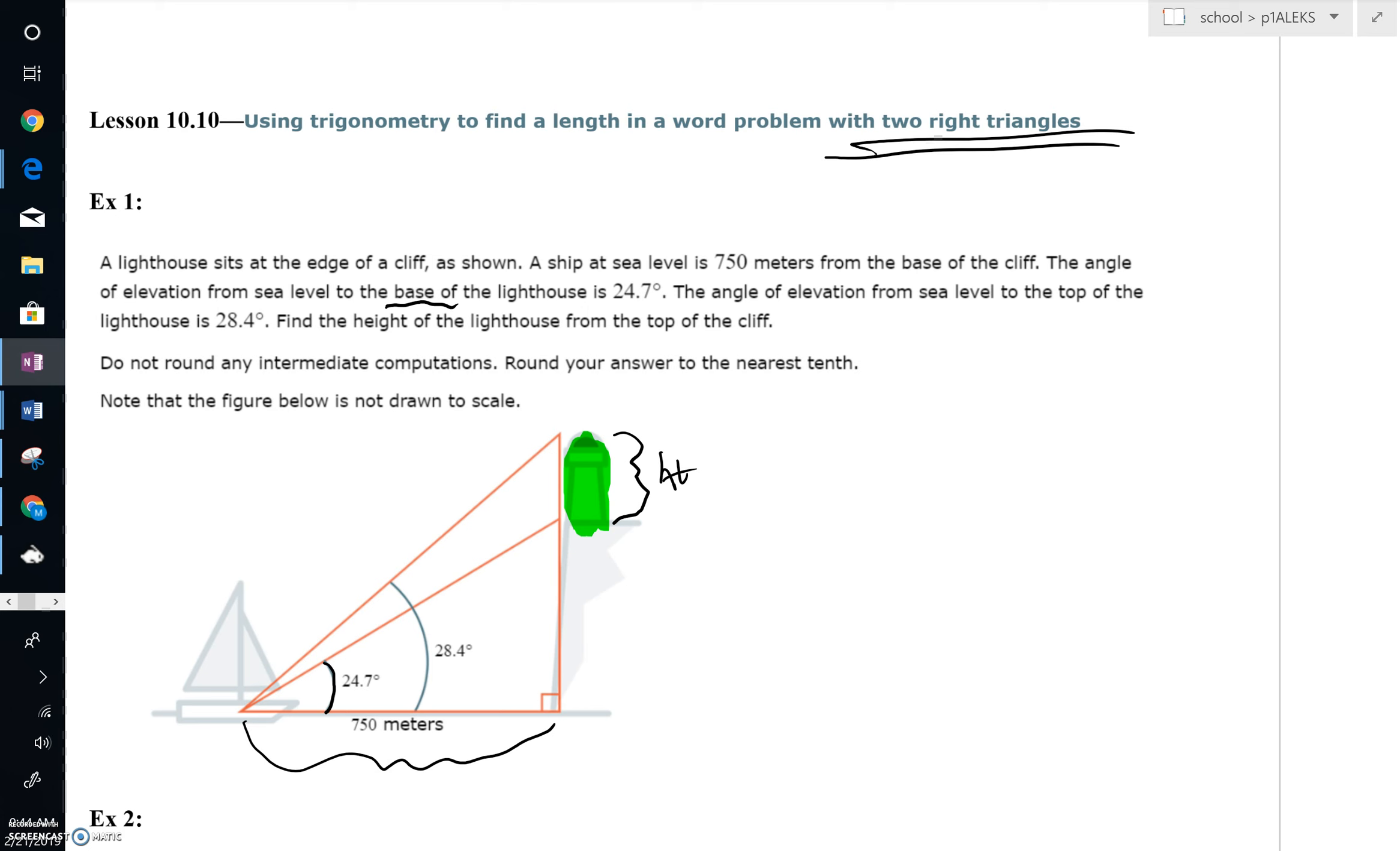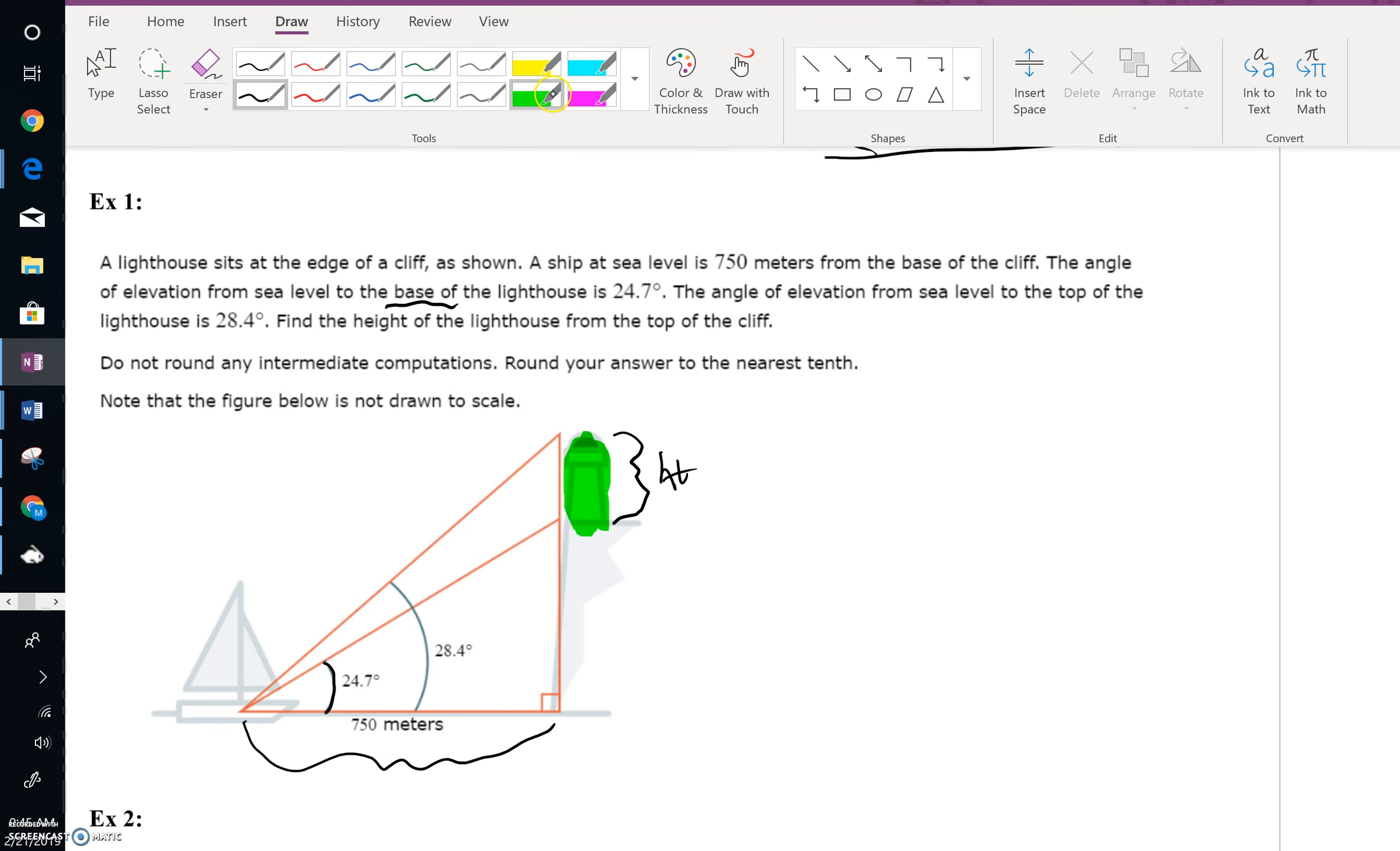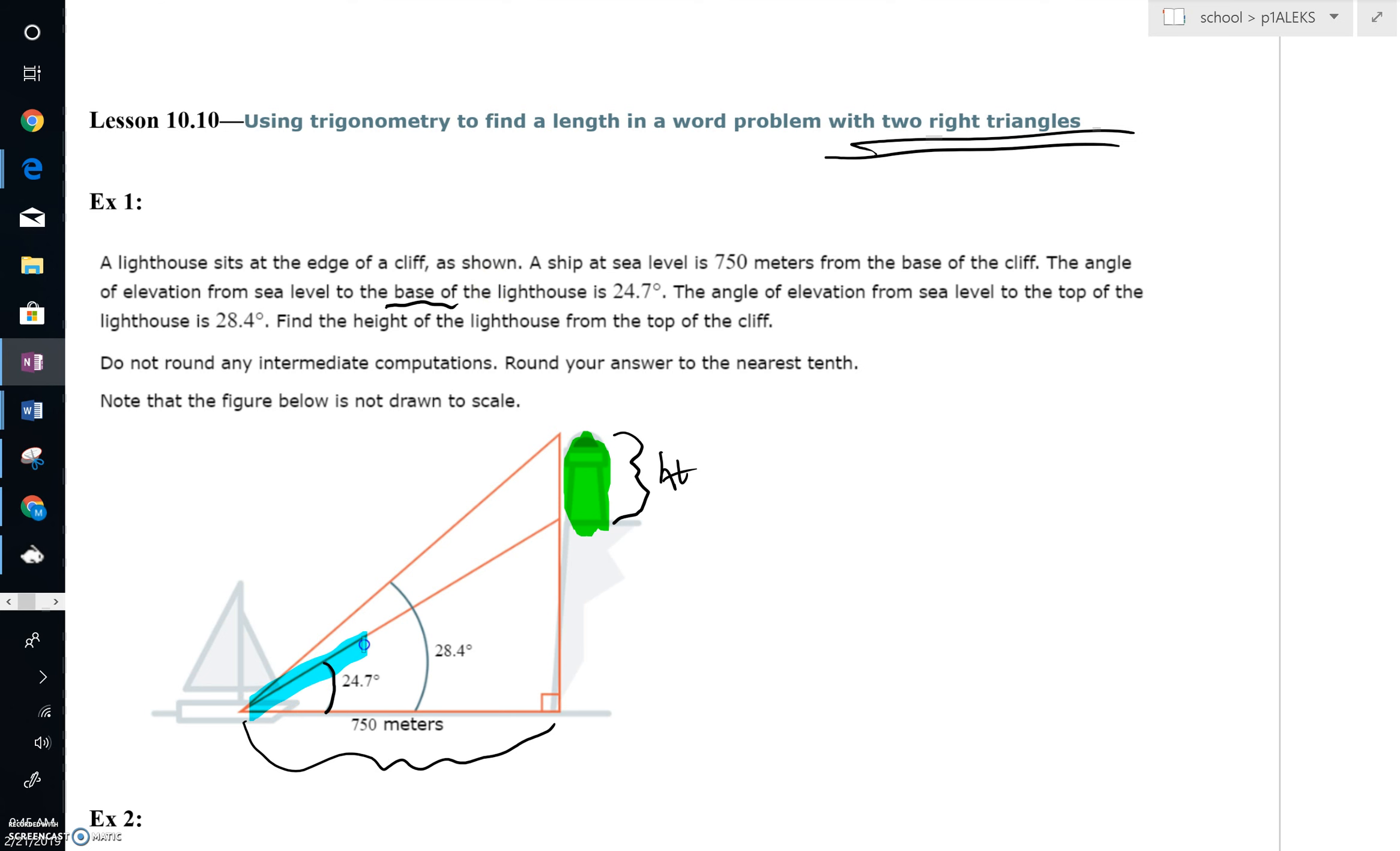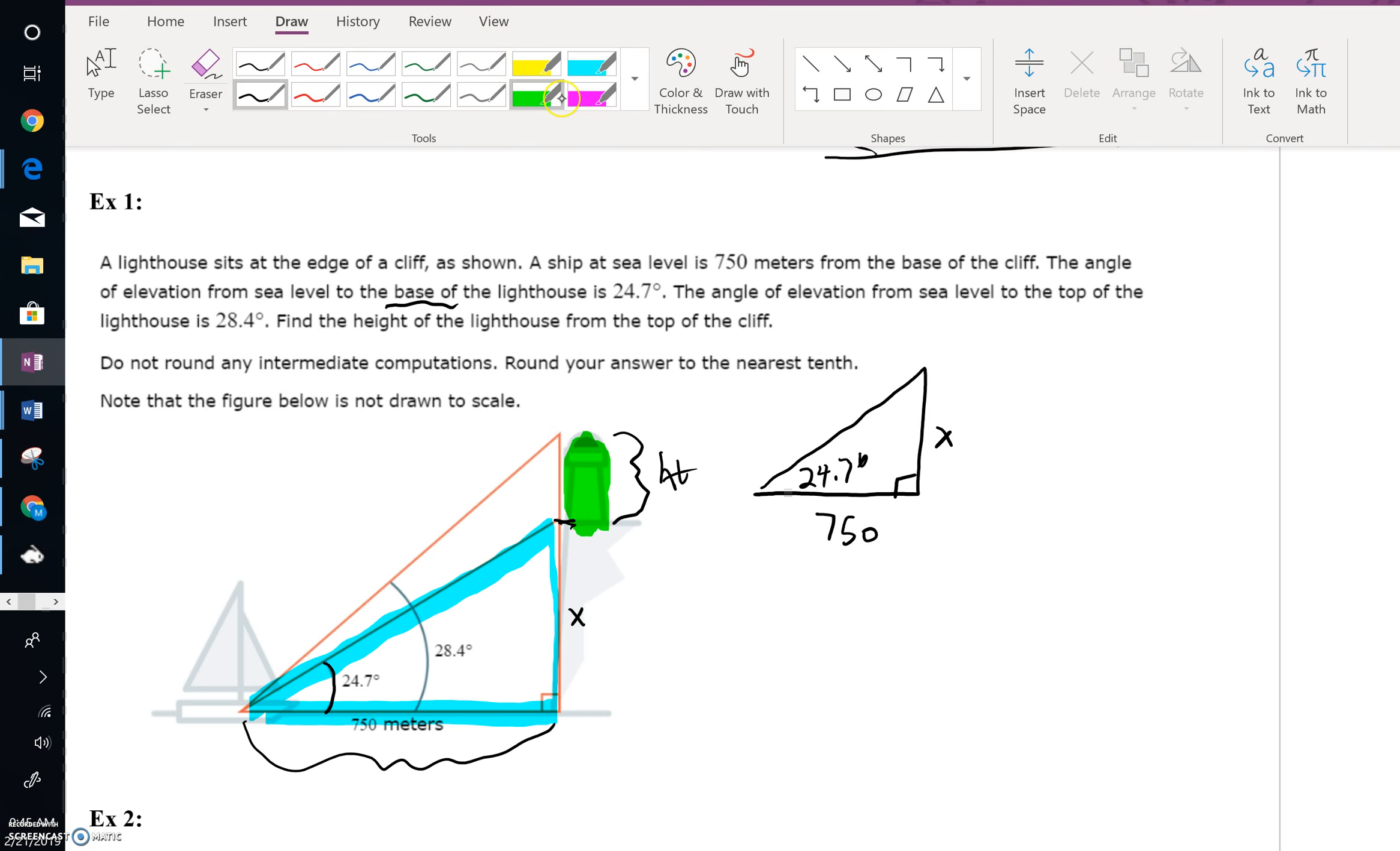I hope you do, in fact, see that there really are two triangles that we could be focused on. We can look over here at this little triangle, and I'm going to go ahead and draw that separately. I'm going to draw that right over here, and we could say here's 750, here's 24.7. And I'm going to call this length right here, X. That's not the height of the lighthouse, it's really the distance from the sea level up to the base of the cliff.